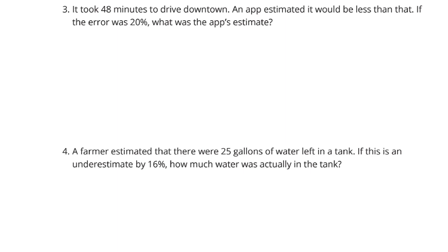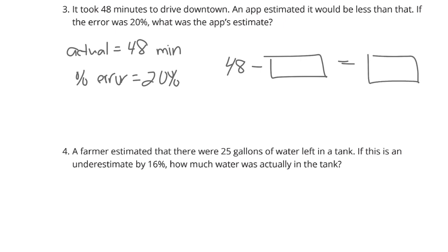What do we know? We know it actually took 48 minutes. We know the percent error was 20%. If it actually took 48, we could subtract away whatever this error was, and we're going to get the estimate. This is going to be the amount of error, and this would end up being the estimate.